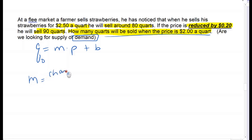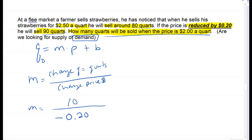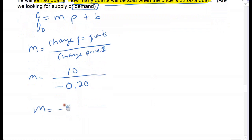Slope is still found the same way: it's the change in quantity over the change in price. They told me the change in price—the price dropped by 20 cents, so it's negative 0.2. When the price went down by 20 cents, quantity went from 80 to 90, so the change in quantity is positive 10. So 10 divided by negative 0.2 means my slope comes out to negative 50.